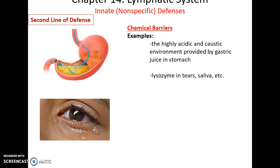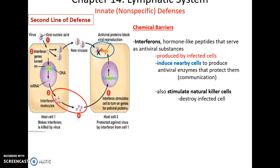Chemical barriers include the high acidity of gastric juices in the stomach and lysozymes — enzymes in tears and saliva that attack pathogens. We also have interferons, which are hormone peptides where an infected cell releases interferons to warn neighboring cells that a pathogen, especially a virus, is present. The neighboring cells then produce antiviral enzymes to protect themselves, and interferons also stimulate natural killer cells to destroy the infected cell.